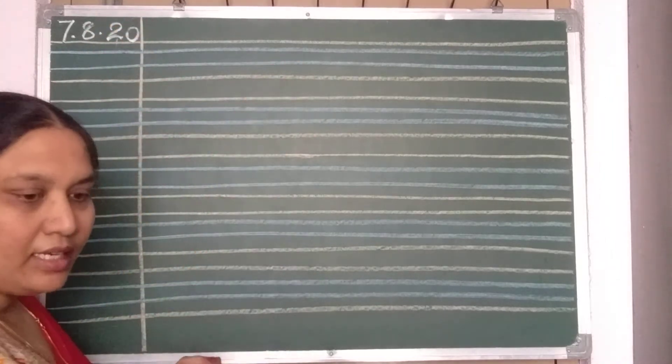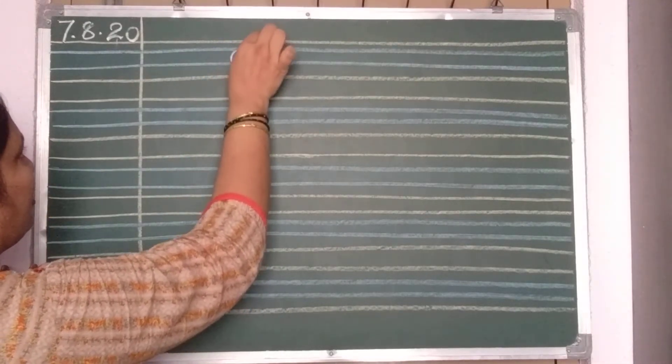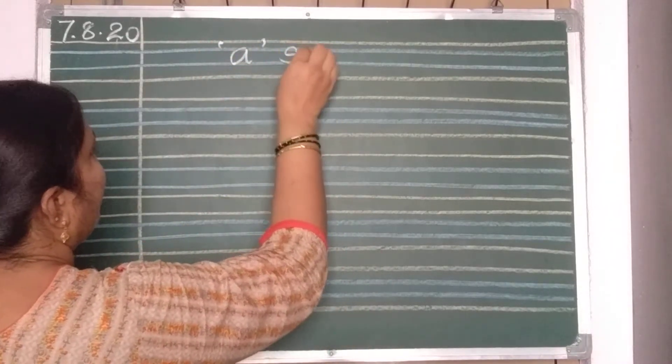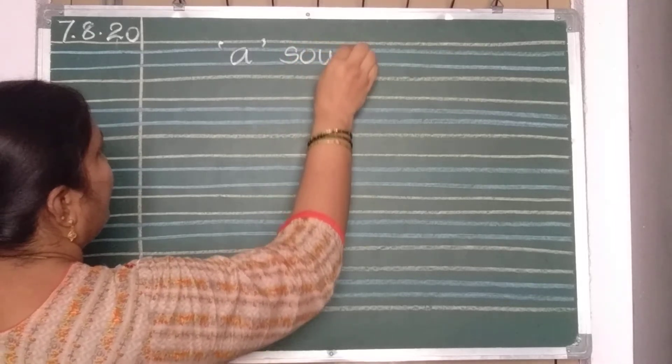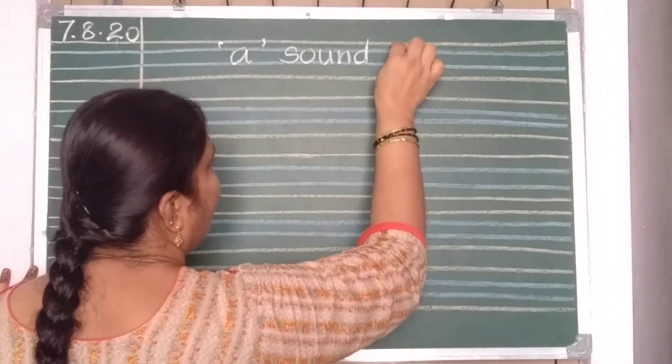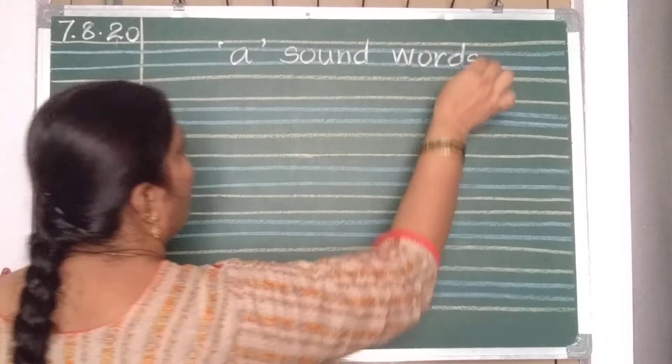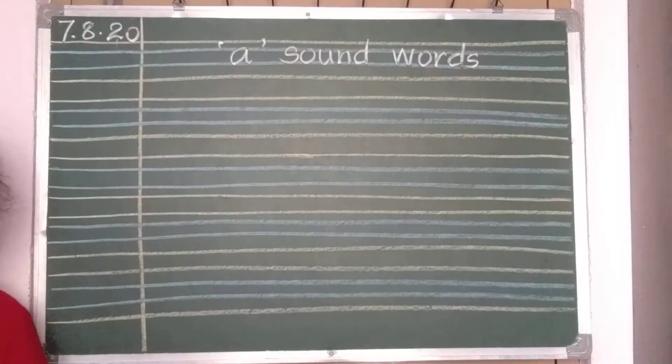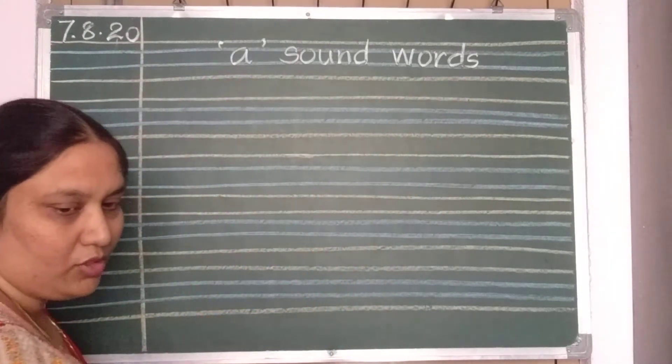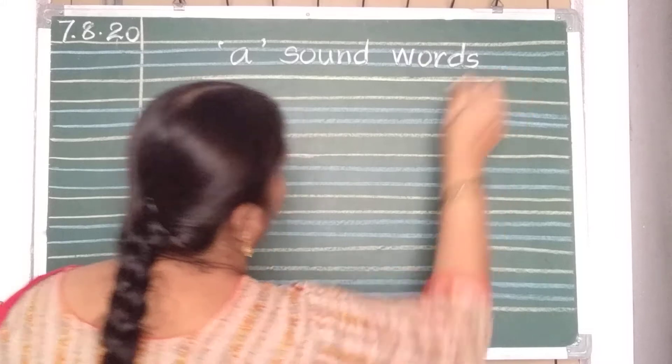And in the first line, you should write the heading. What is the heading? We are going to write A sound words. So, write down A. Put it into inverted commas. Take one finger gap. S, O, U, N, D, sound. A, sound. Again, one finger gap and write. W, O, R, D, S, words. A, sound, words. Come on. And you should underline it with a red crayon or a red pencil.